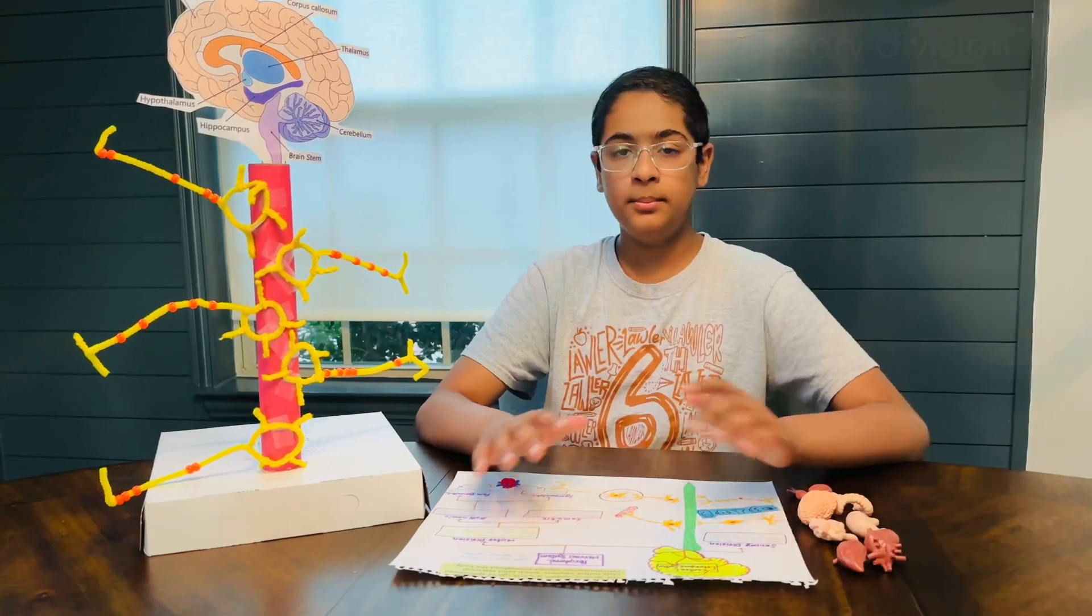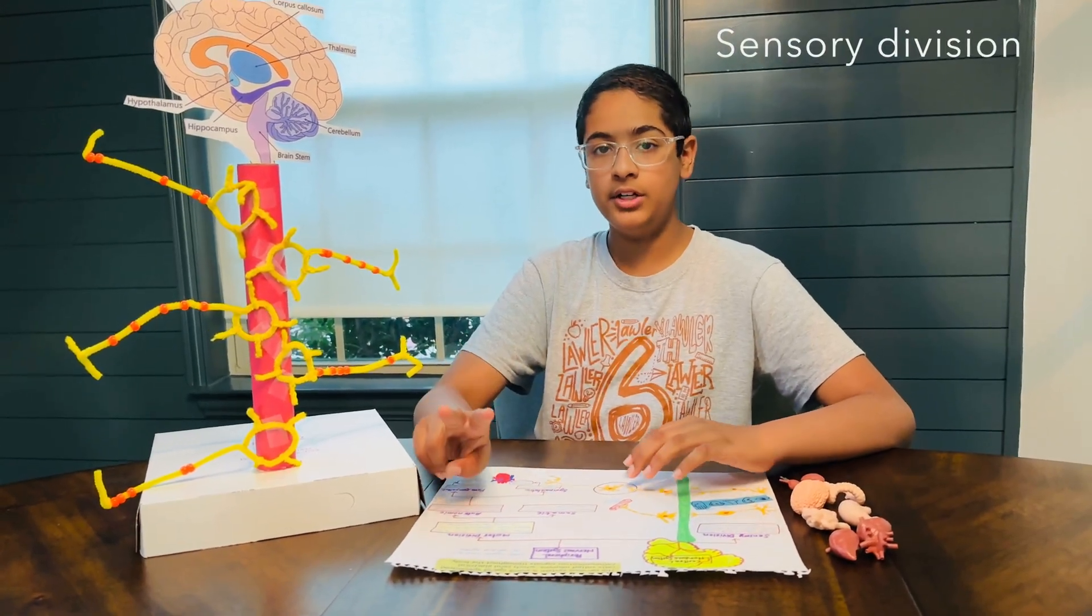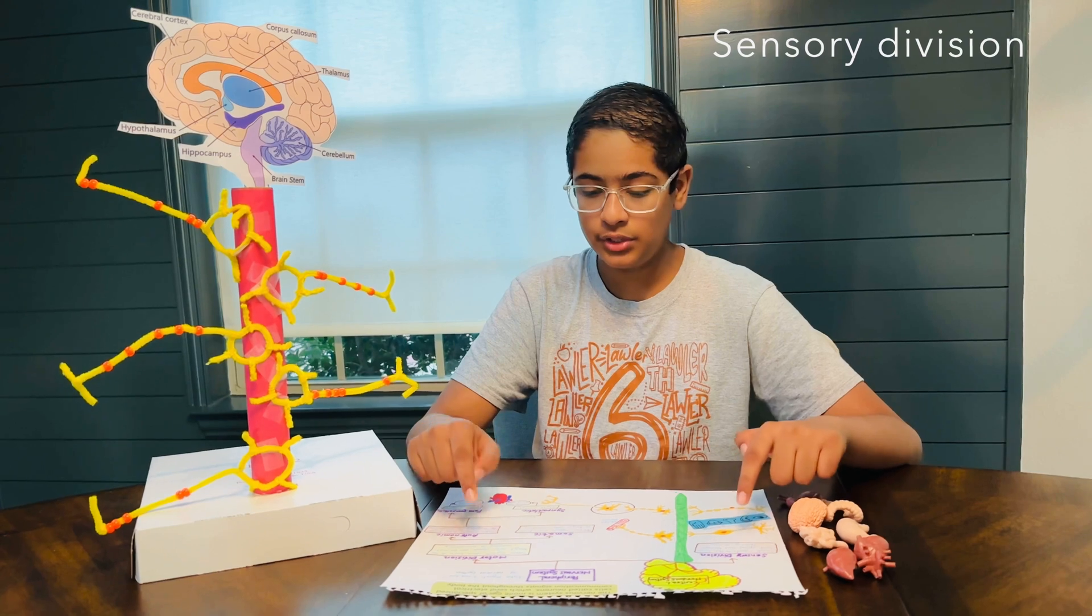Their job is to be able to detect the surrounding environment and move appropriately to be able to survive in it. So in the peripheral nervous system, it can be split into two different branches, that being the sensory division and the motor division.